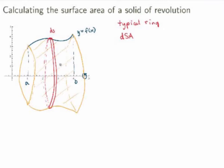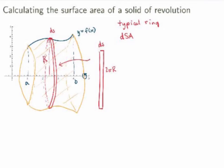What is the area of a typical ring? Well, you could just cut the ring and you'd end up with a rectangle. The width of the rectangle would be ds, the length of the line segment, and the height would be the circumference of the ring, which is 2πr, where r is the radius of the ring — the distance between the curve and the axis of rotation. So the area of the ring is 2πr times ds.